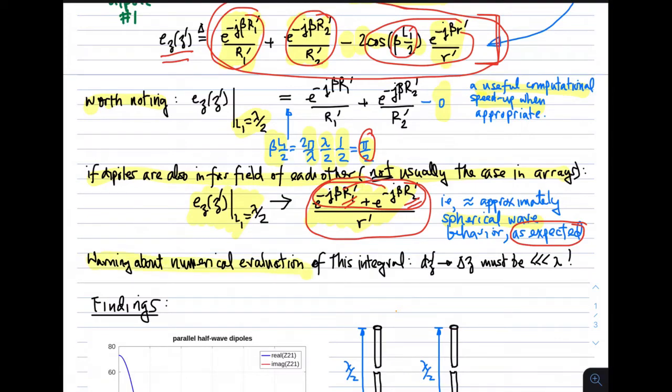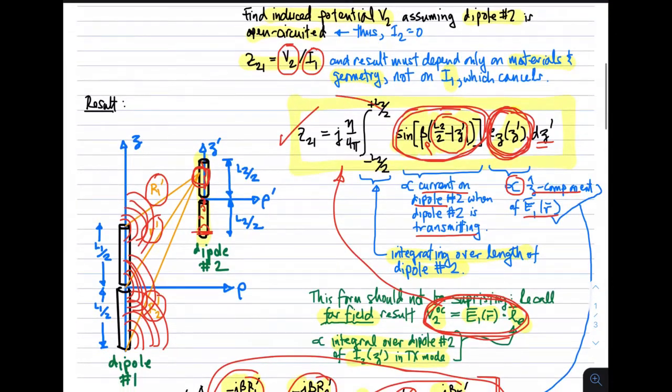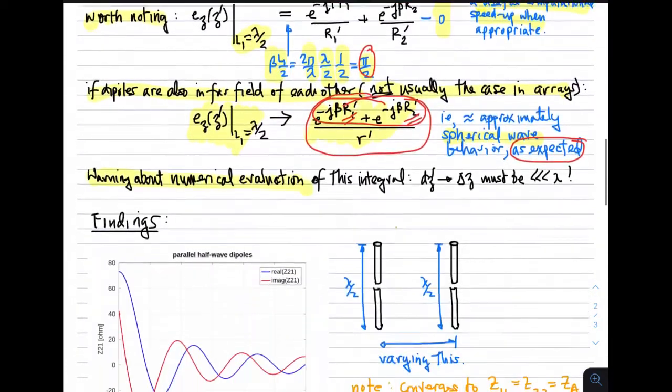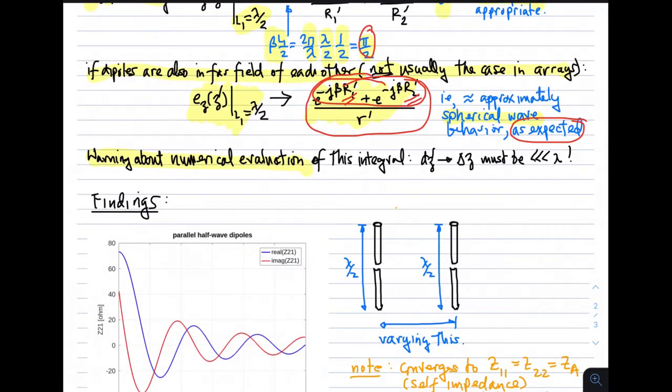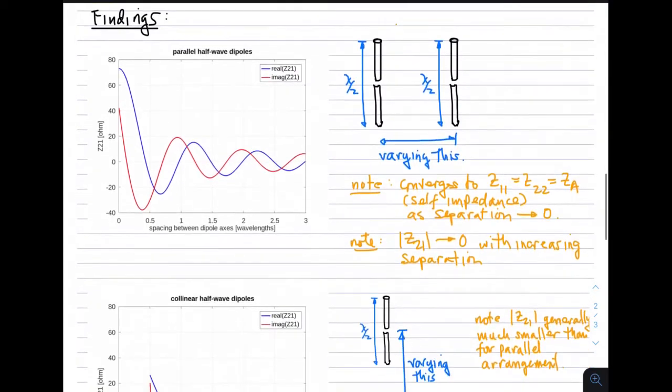Final important comment: since this expression typically requires numerical integration, you must be very careful. The increment delta Z, which you break the integral up into, must be much, much less than a wavelength. That's because the integrand varies very quickly with respect to wavelength. Don't think you can break this up into one-tenth of a wavelength chunks. Typically the delta Z has to be much less than a tenth of a wavelength, even.